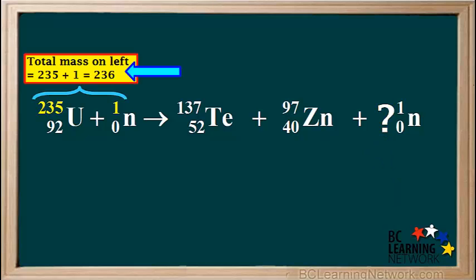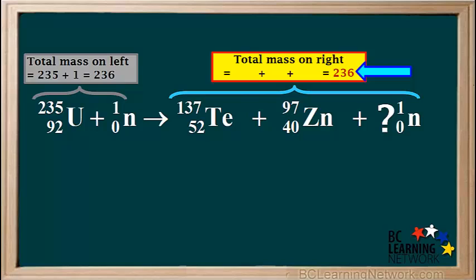The total mass on the left side of this equation is 235 plus 1, which equals 236. So the total mass on the right must also be equal to 236. The mass of the tellurium is 137, and the mass of zinc is 97. 137 plus 97 is equal to 234. So the total mass of the neutrons must be 236 minus 234, which is equal to 2.